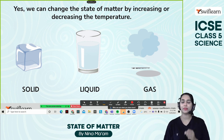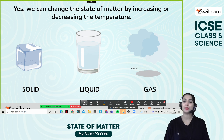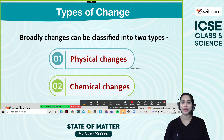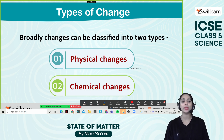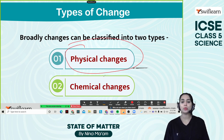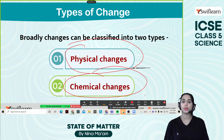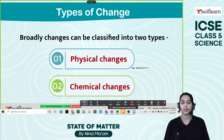If we keep the liquid in the fridge, what will happen? The freezing will take place and it will turn into the solid state again. So the type of change can be divided into two categories: the first one is a physical change and the second one is a chemical change. These are the two possible changes that can happen within the states of matter.